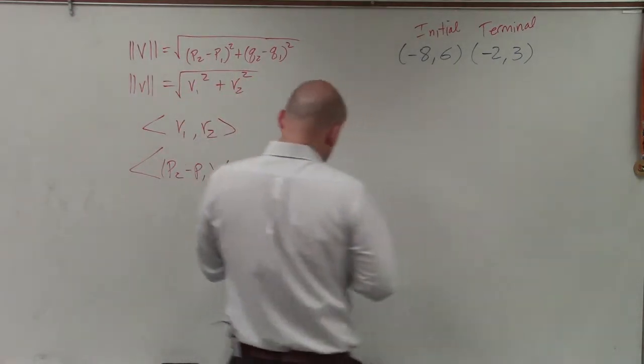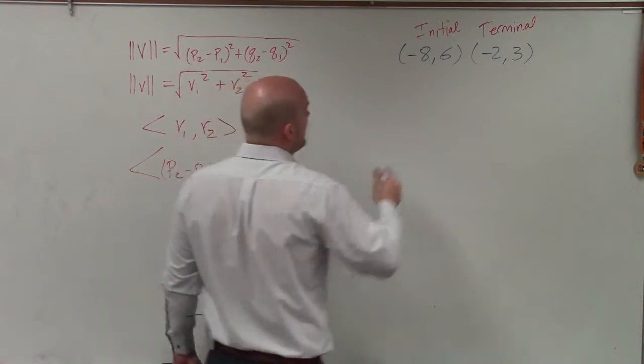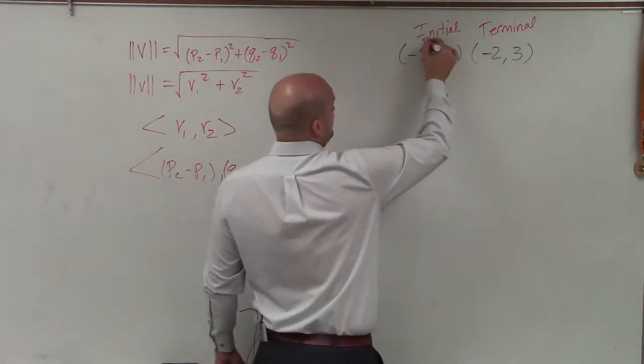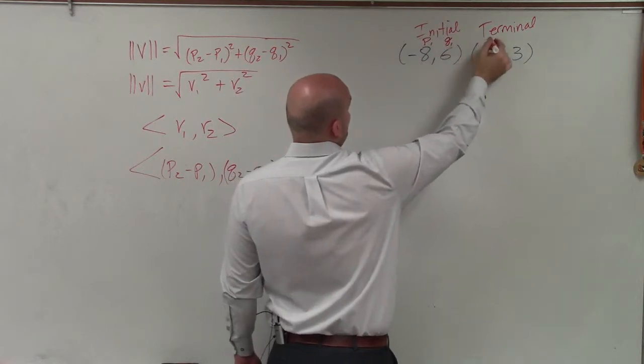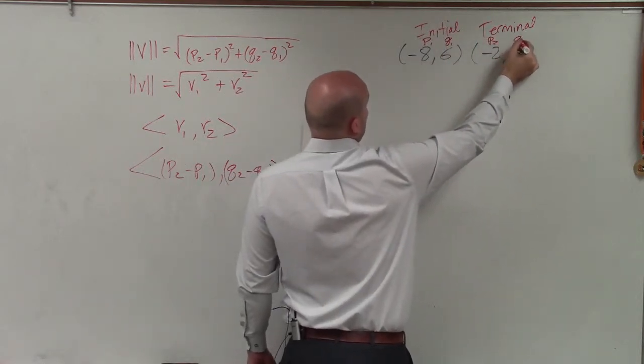To do that, I first need to label my p1, p2, q1, q2 based on the initial and the terminal point. So I'll call this p1, this will be q1, p2, q2.